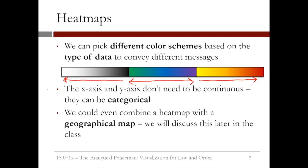The x and y-axes in a heat map don't need to be continuous. In our example, we have a categorical or factor variable, the day of the week. And we can even combine a heat map with a geographical map, which we'll discuss later in this lecture. This type of heat map is frequently used in predictive policing to show crime hotspots in a city.